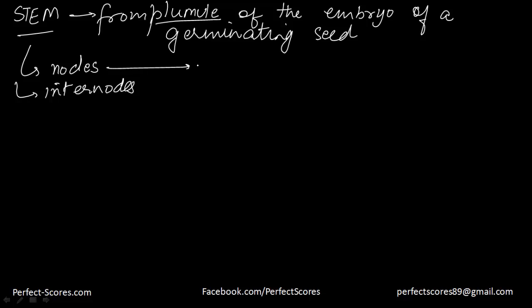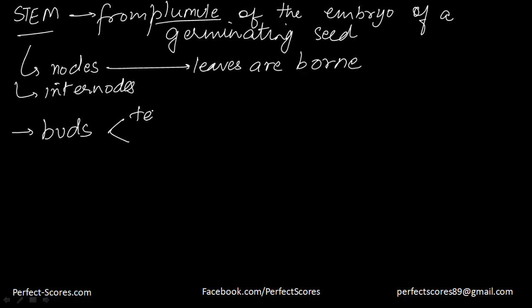The region of the stem where leaves are born is called the node, and the portion between two nodes is known as an internode. The stem also has buds that can be either terminal or axillary. The stem is usually green when young, and as the plant matures it becomes woody and dark brown. The main functions of the stem are to spread out branches bearing leaves, fruits, and flowers; to conduct water and nutrients; to store food; to support the plant; to protect it; and to help in vegetative propagation.